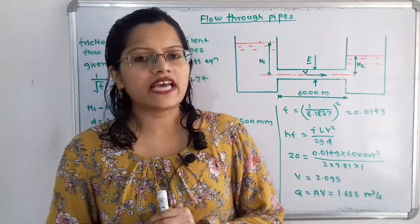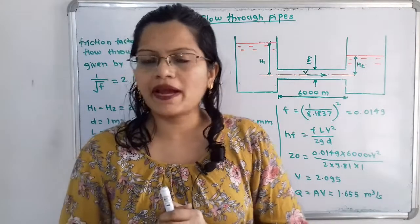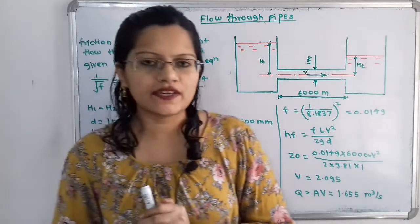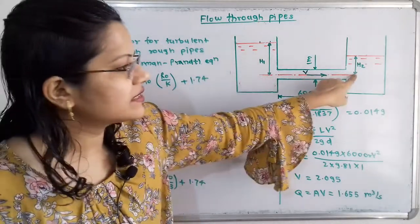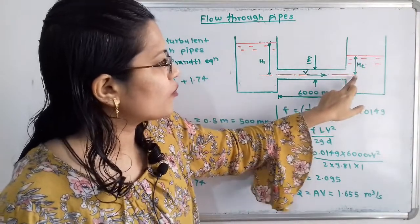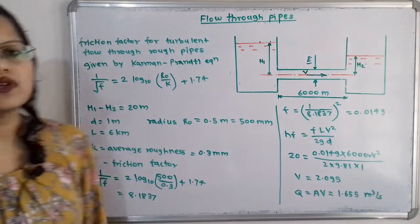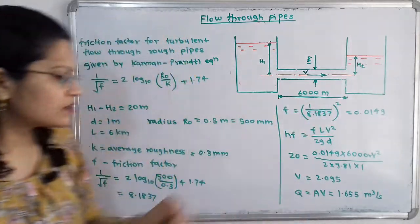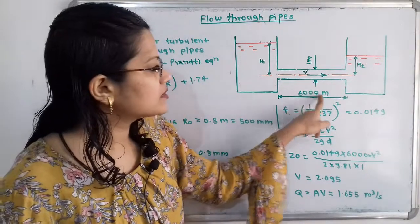Let us understand the diagram as per the given data. The pipe made up of cast iron is a rough pipe attached to two reservoirs. The difference in fluid levels is given as H1 minus H2 equal to 20 meters. The pipe has a diameter of 1 meter and a length of 6 kilometers, which we convert to 6000 meters.